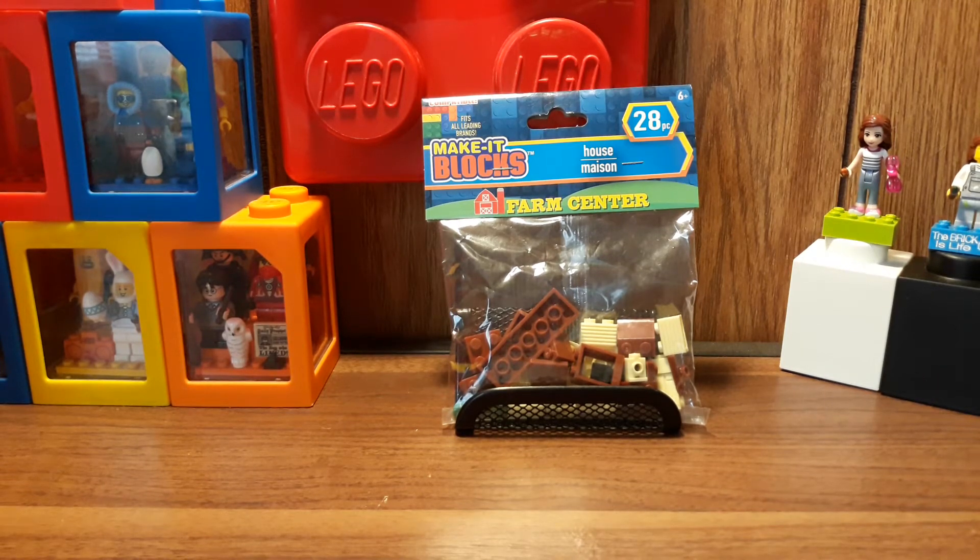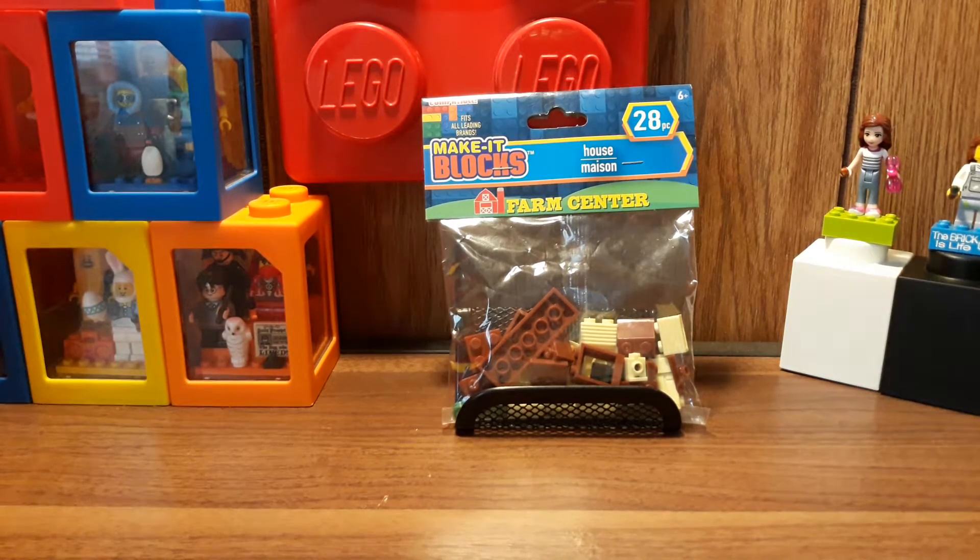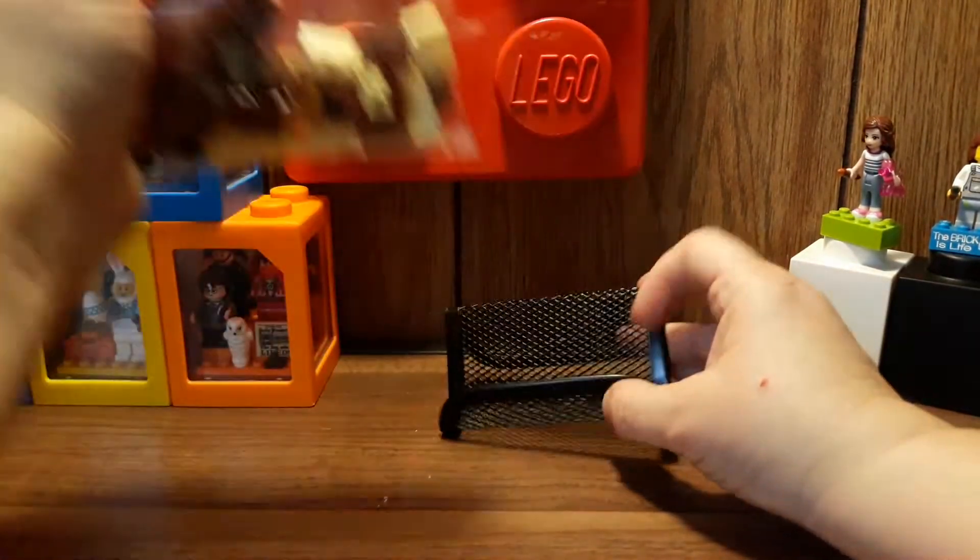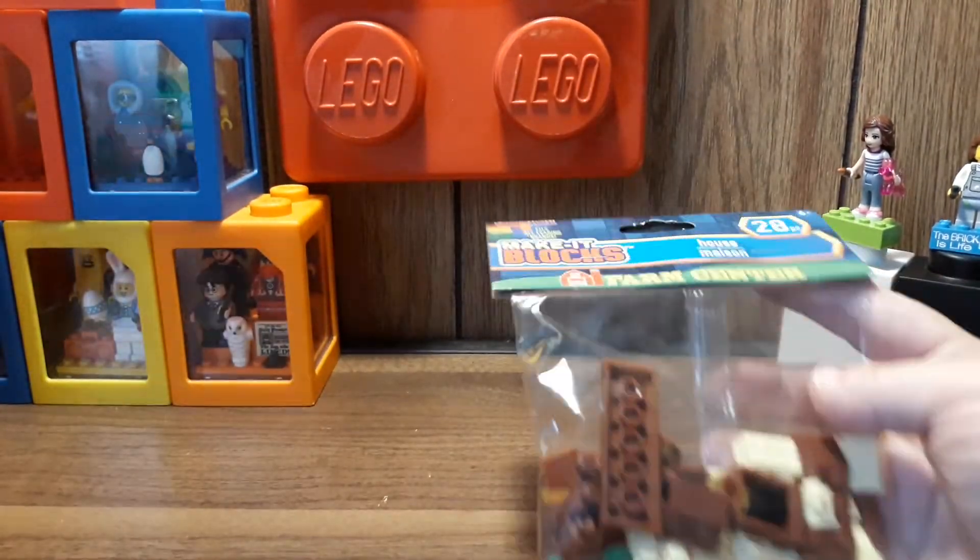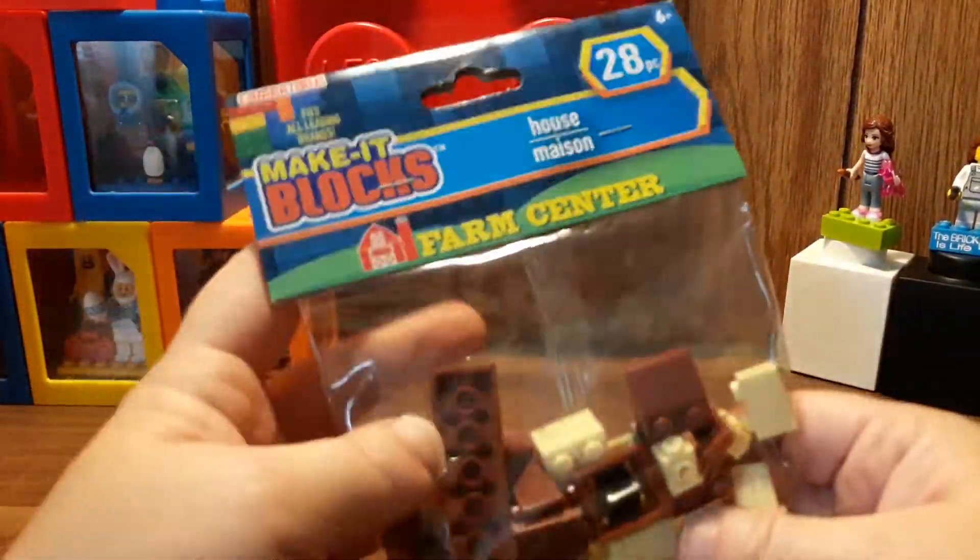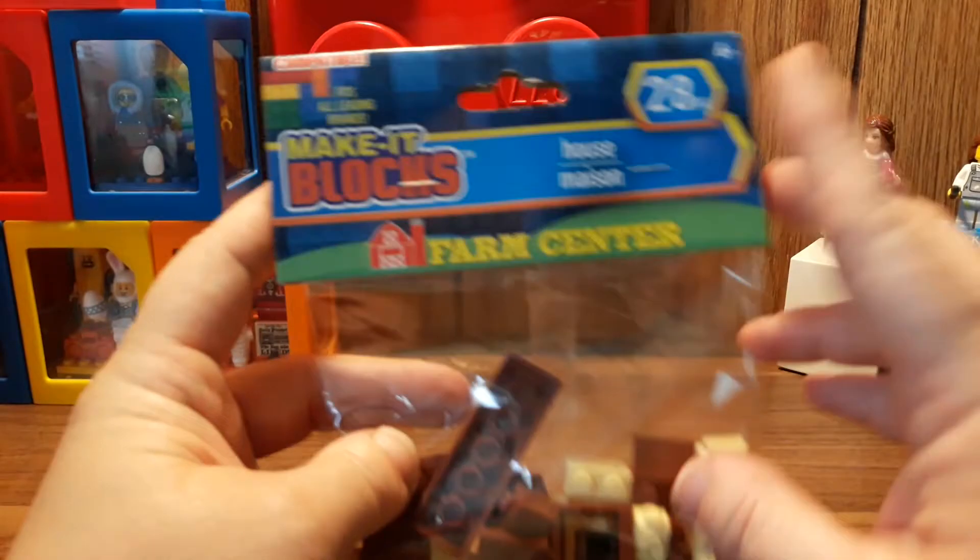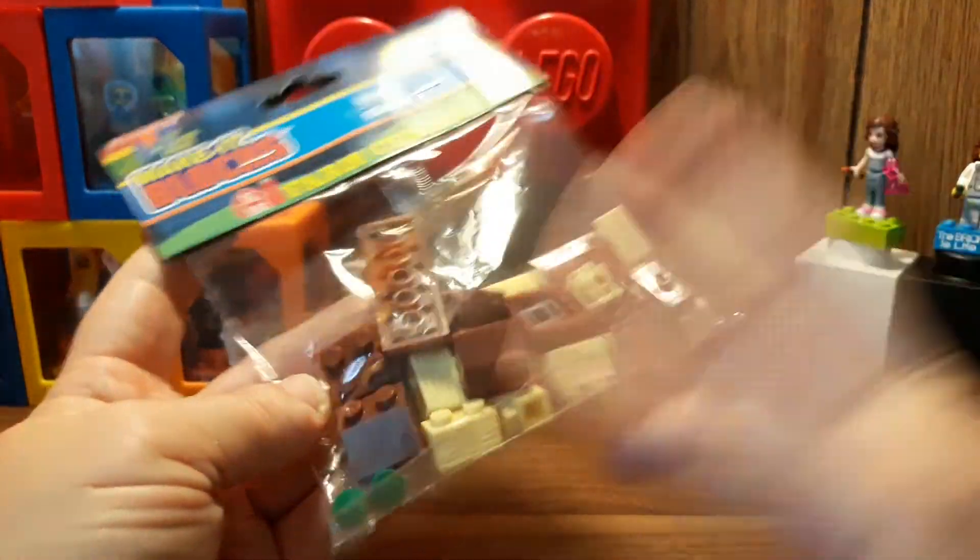Hey guys, Nessa here and today is another Lego versus Make It Blocks. I got this at Dollar Tree and of course it's only a dollar. It has 28 pieces and it's just called House. Now the instructions aren't in the bag, they're on the back.